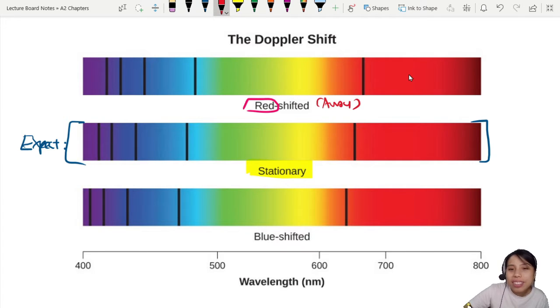Oh, remember this from AS? A thing moving away from you or blue shifted, which means the object or the star is moving towards you. So you can use this to study stars and you decide, is this star coming towards me or away from me?